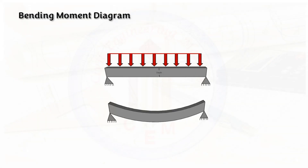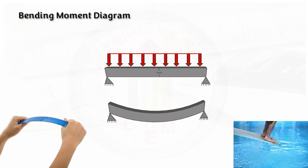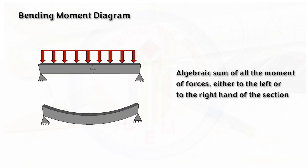Next, bending moment. When a load is applied on the beam it tends to bend like a curve — that is bending moment. The best example is bending a ruler with your hand, or a diving board bending under a person's weight. Bending moment is the algebraic sum of all the moment forces either to the left or to the right of the section.